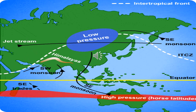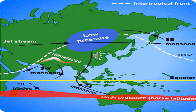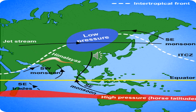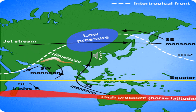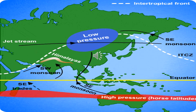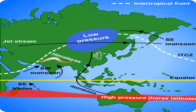Most of the monsoon rainfall occurs in the northern parts of Pakistan. After hitting the northern mountains, the winds move towards the south, where the mountains act as a barrier. As they move south, they have lost most of their moisture and aridity starts increasing. That is why most monsoon rainfall occurs in the mountains and the upper Indus plain, with very little rainfall reaching areas like Multan and the lower Indus plain.